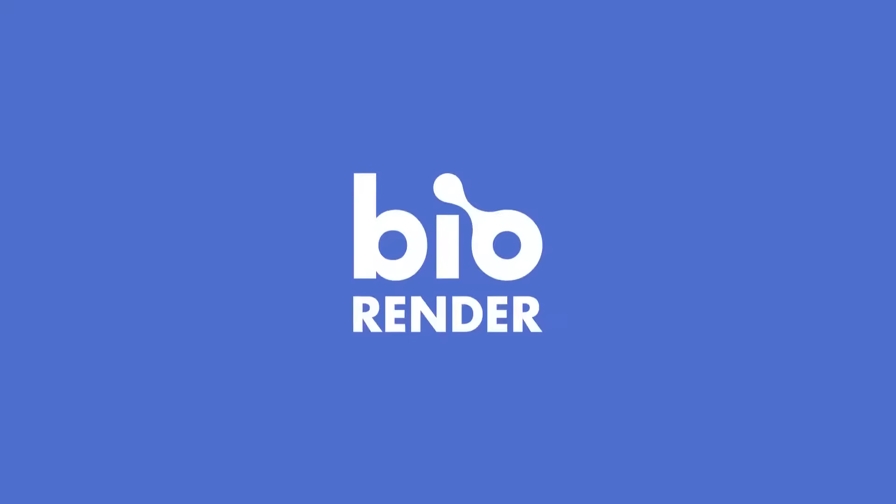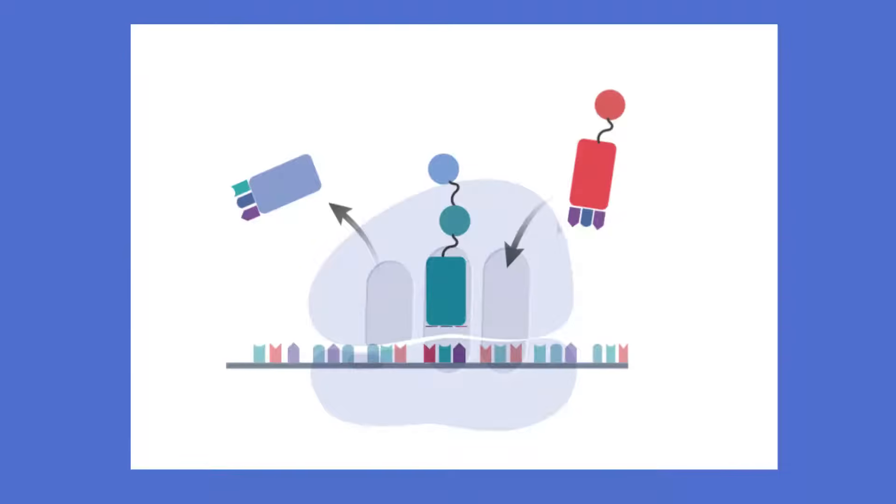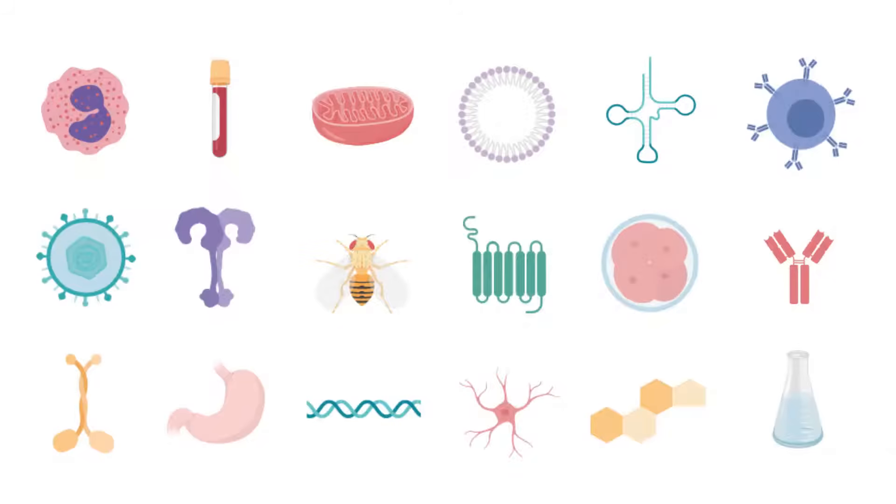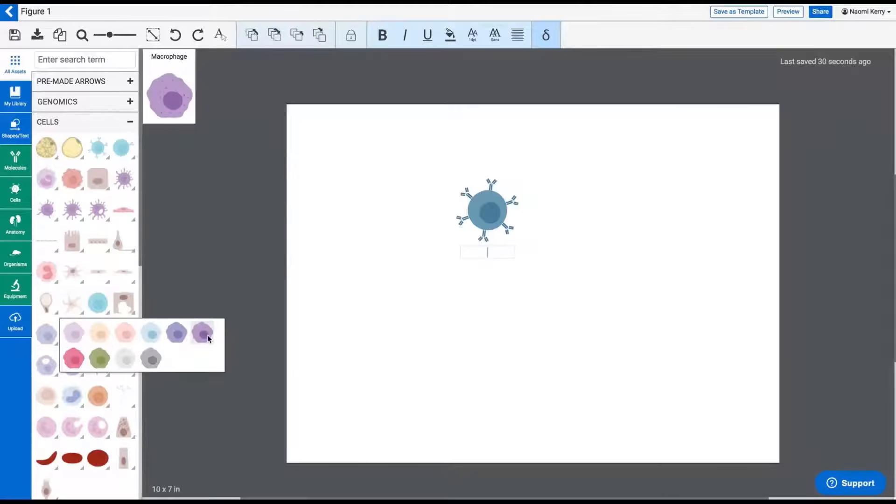And that's why we created BioRender. BioRender is an easy online app that makes creating scientific figures a breeze. We've already created a library of life science-related icons in a wide range of fields, so you don't have to. Simply drag and drop to craft your own beautiful illustration in minutes.